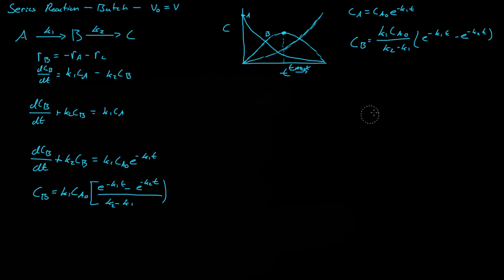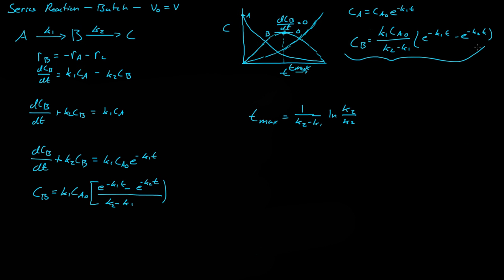What we really want to find is the maximum time we want these chemicals in the reactor. The greatest concentration of B occurs when there is a tangent line with a slope of zero — that means dC_B over dt must equal zero to get the greatest concentration of B. So all we have to do is differentiate the C_B equation and set it equal to zero. Doing that, we get T max equals 1 over (K2 minus K1) times the natural log of K2 over K1. That is the T max.